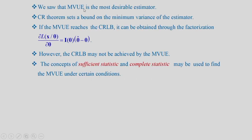We saw that MVUE is the most desirable estimator. The Cramér-Rao theorem sets a bound on the minimum variance of the unbiased estimator. If the MVUE reaches the CRLB, it can be obtained through the factorization: del L / del theta = I(theta) * (theta_hat - theta), where theta is the parameter vector, theta_hat is the unbiased estimator vector, and I(theta) is the Fisher information matrix. However, the CRLB may not be achieved by the MVUE.